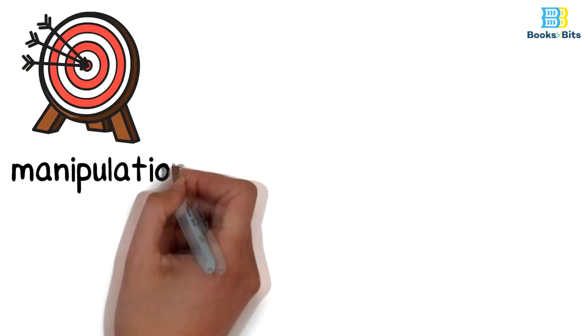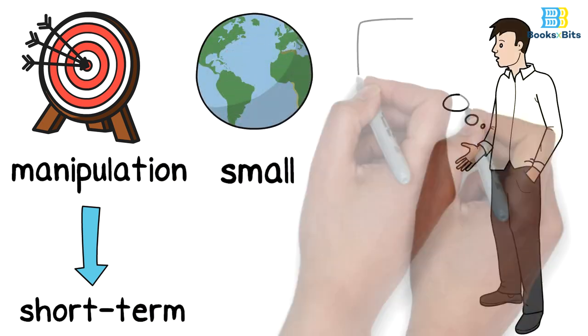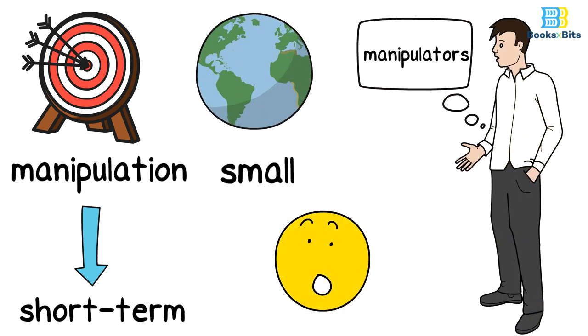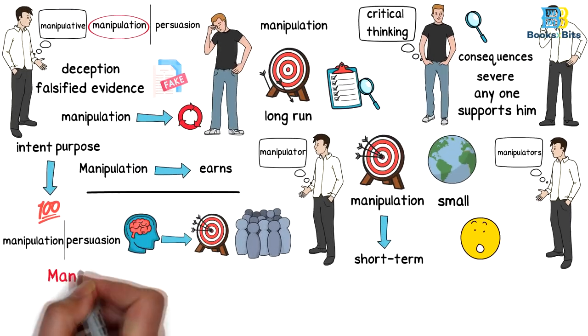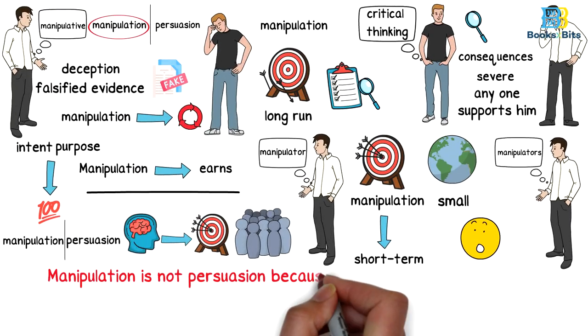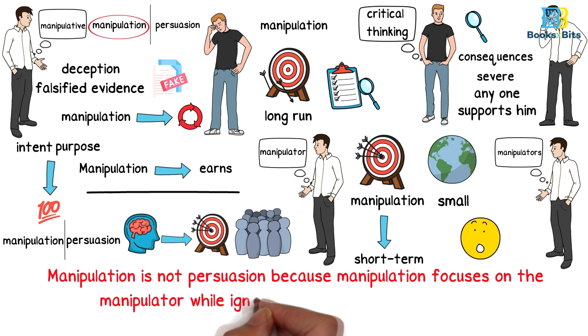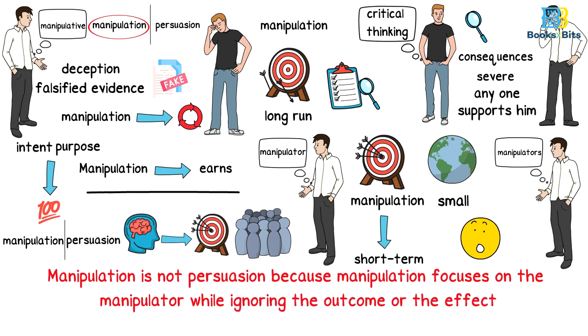That is, we must always know that the goals and results of manipulation are short-term, and the world is so small, and manipulators always get caught. Bit to remember, manipulation is not persuasion because manipulation focuses on the manipulator while ignoring the outcome or the effect.